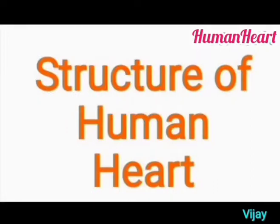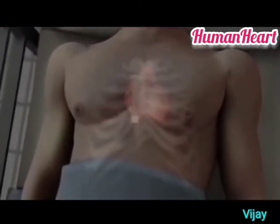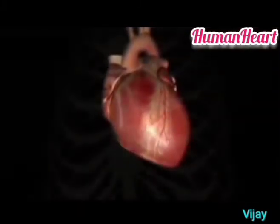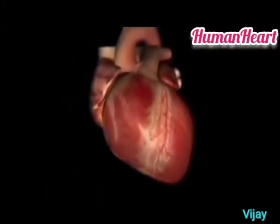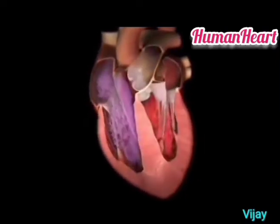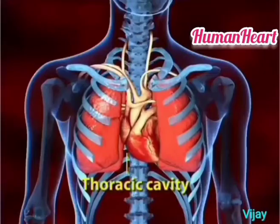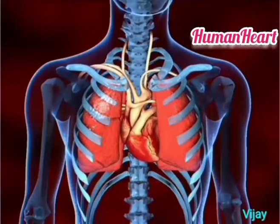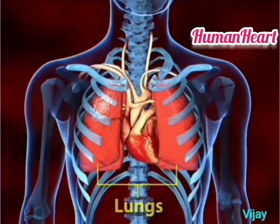The structure of the human heart: the heart is a muscular organ that pumps blood into the blood vessels. The human heart is located between the two lobes of the lungs. The majority of the heart occupies the left side of the chest cavity, also called the mediastinum.